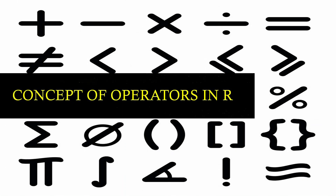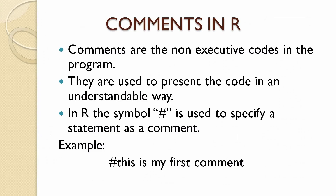Let us know about the concept of operators in R. Before going to that, let us know how comments are written in R. Comments are the non-executable block of quotes or statements in the program. They are only used to present the code in an understandable way. In R, the hash symbol is used to specify a statement as a comment. For example, hash followed by 'this is my first comment' is a comment, where the hash symbol specifies that the following statement is non-executable. The purpose of comments is to only specify the purpose of the code which is written.